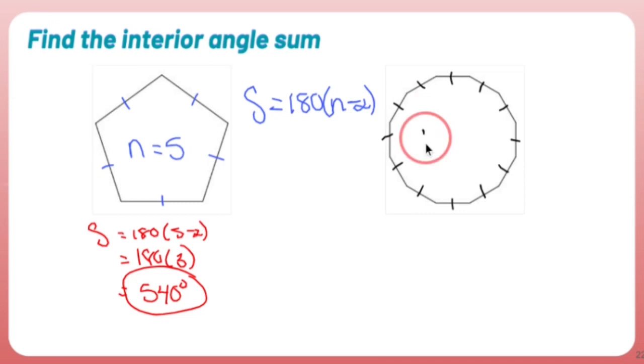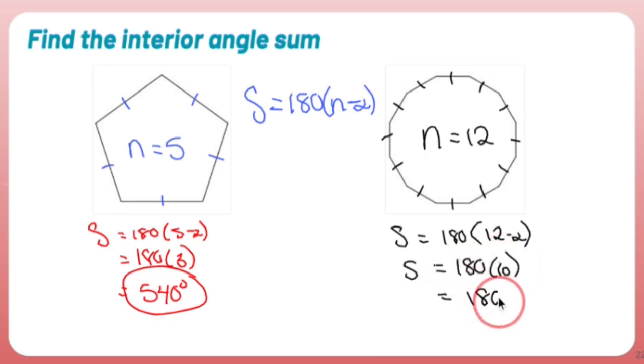So N equals 12 in this case. So the sum of all the angles is going to be 180 times 12 minus 2. So the sum is going to equal 180 times 10, which is 1,800 degrees total.